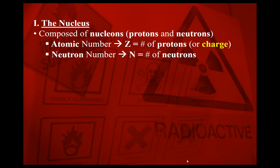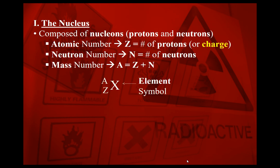The neutron number we'll represent with a capital N, and this is going to be the number of neutrons. Your atomic mass number would be equal to the number of protons plus the number of neutrons, and we'll represent that with a capital A.